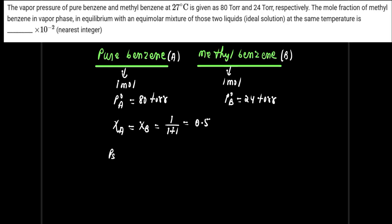After this, we find P of solution. P_solution equals P_A plus P_B, using Raoult's law where P_A is P°_A into X_A. So P°_A is 80 Torr multiplied by 0.5, plus P°_B is 24 Torr multiplied by 0.5. Upon solving, we get 40 plus 12, which equals 52 Torr.